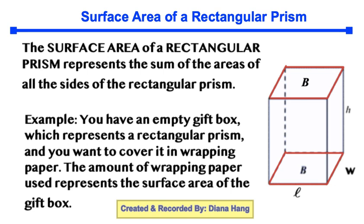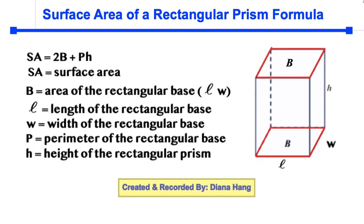So let's next talk about the formula. This is the same diagram of the rectangular prism, and our formula is SA (surface area) equals 2 times capital B plus capital P times H. Capital B is the area of the rectangular base, which is length times width.